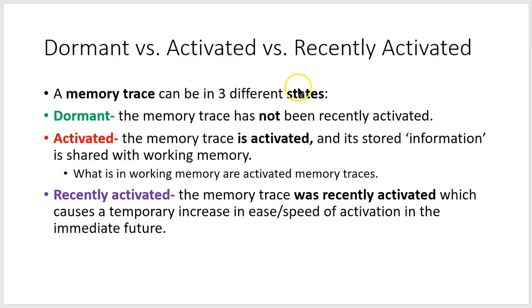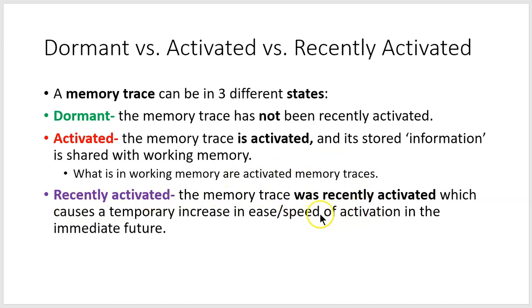Let's revisit the three different states a memory trace can exist in. Dormant memory traces have not been recently activated. An activated memory trace is when we're attempting to retrieve information and loading it into working memory — we can think of working memory as just activated long-term memory traces. Recently activated memory traces enjoy a temporary increase in ease and speed of activation in the immediate future, due to the temporary increase in synapse strength among the neurons in the memory trace.